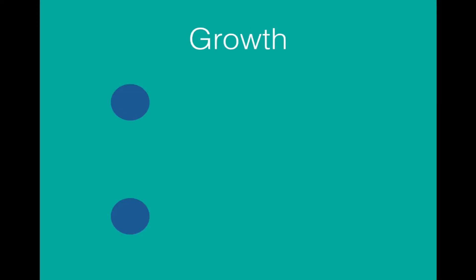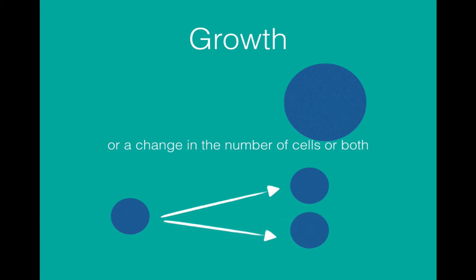The next characteristic is growth. Growth can be a change in the size of cells, so the cells getting larger, for example after division. Or it can be a division, so you can have a change in the number of cells. Generally, you'll have a combination of both.